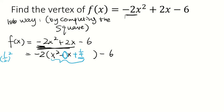So add 1 fourth. We have to subtract 1 fourth. So it's like we're adding 0. It's still the same function. So here we have negative 2 times...